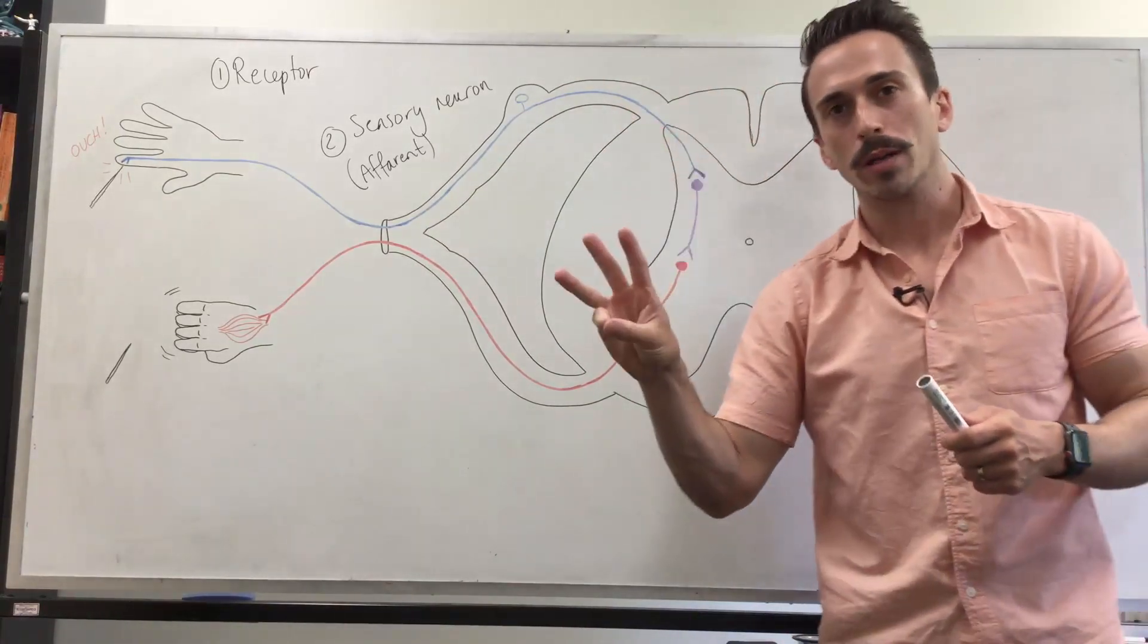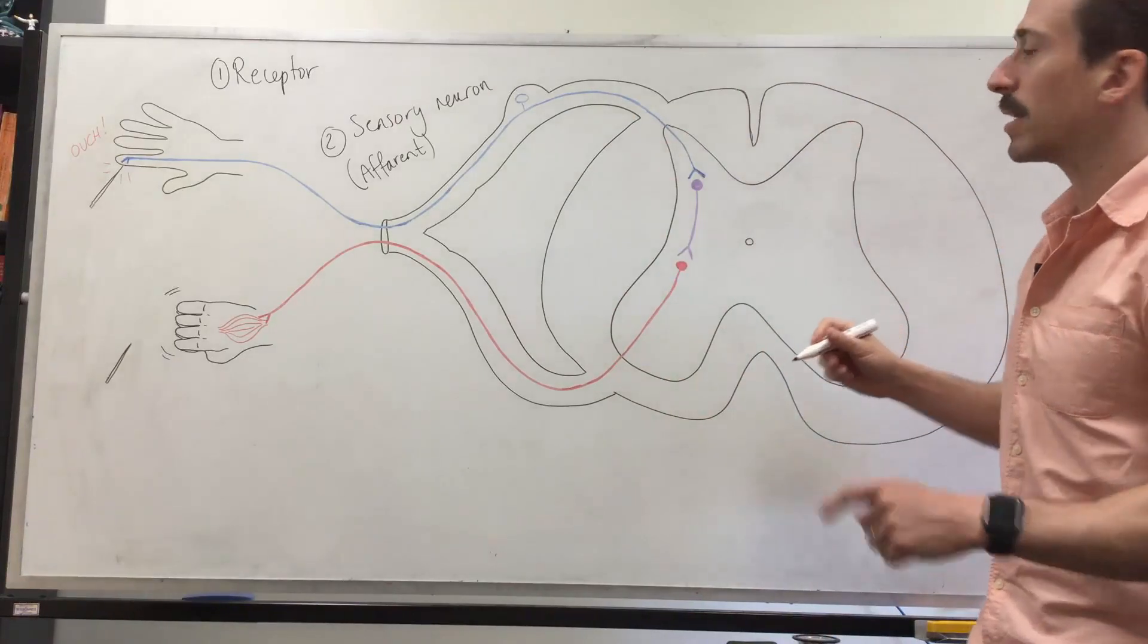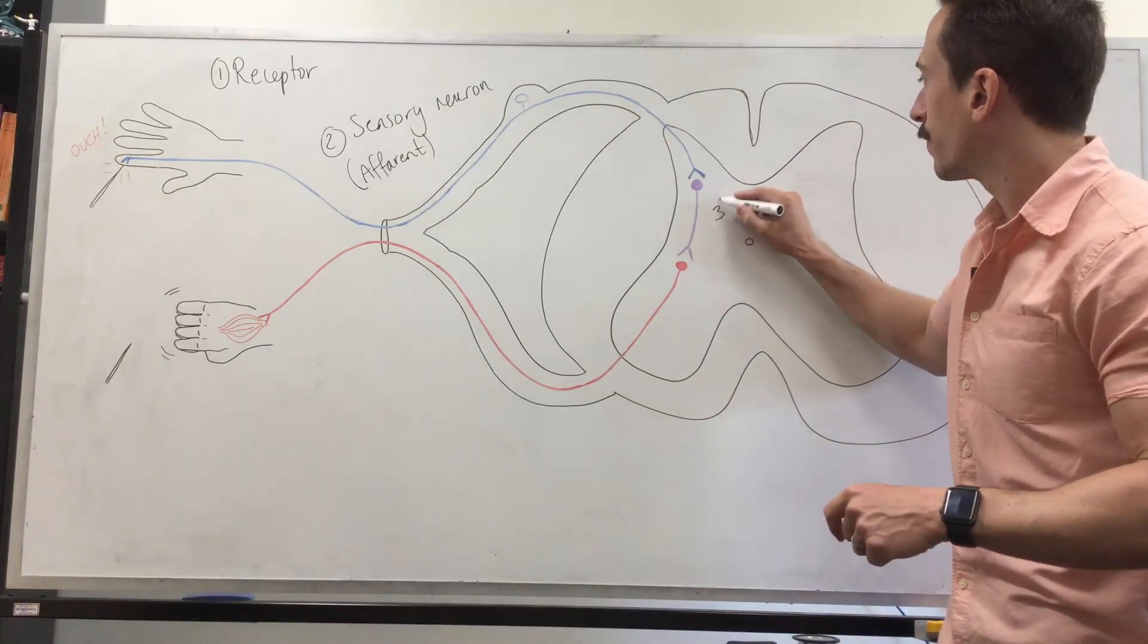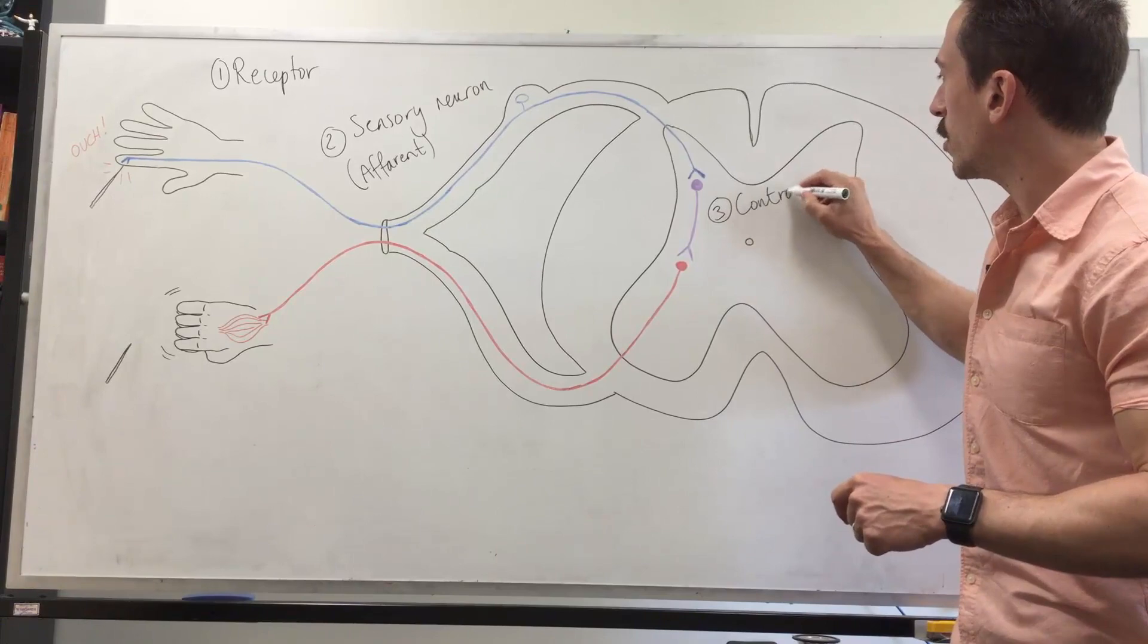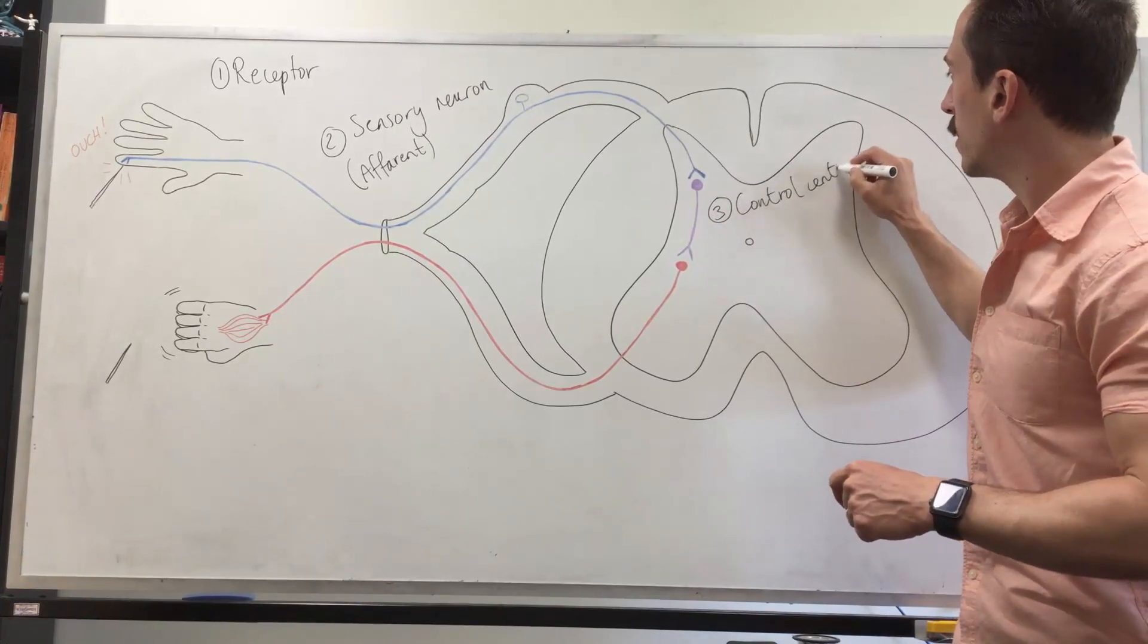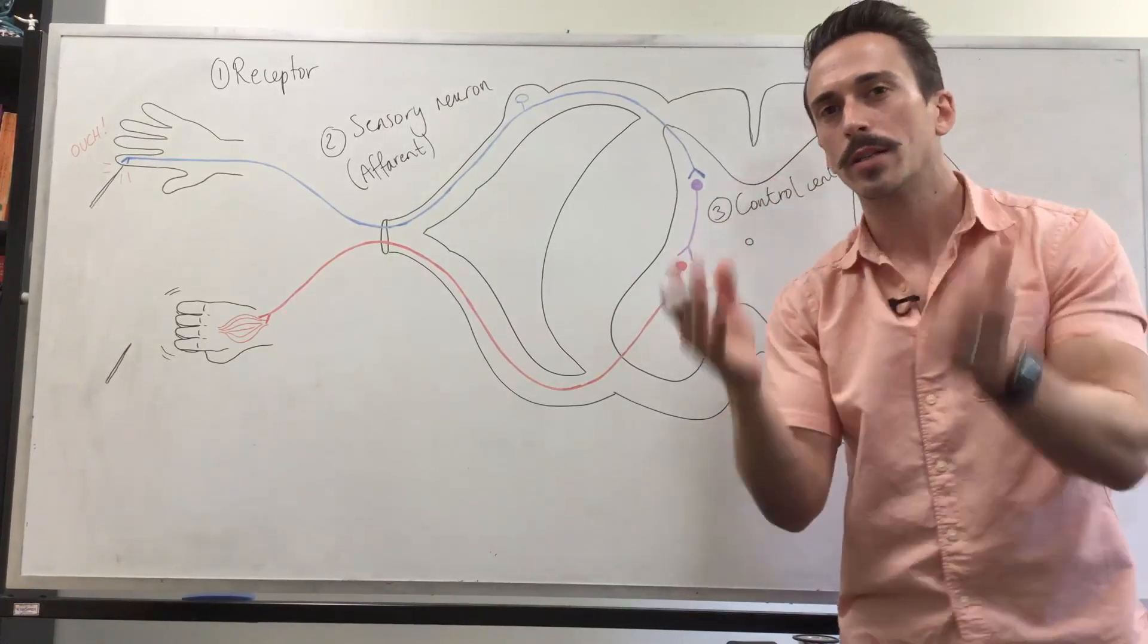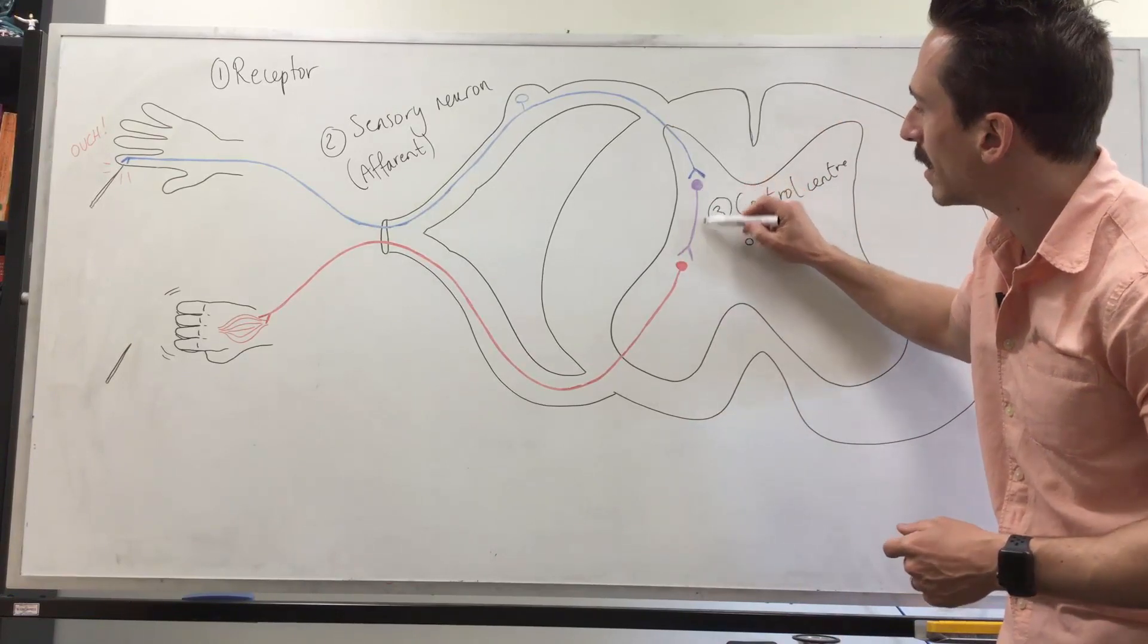Now the third component of a reflex arc is going to be the control center, also known as the integration center. In this scenario the control center or integration center is going to be an interneuron.